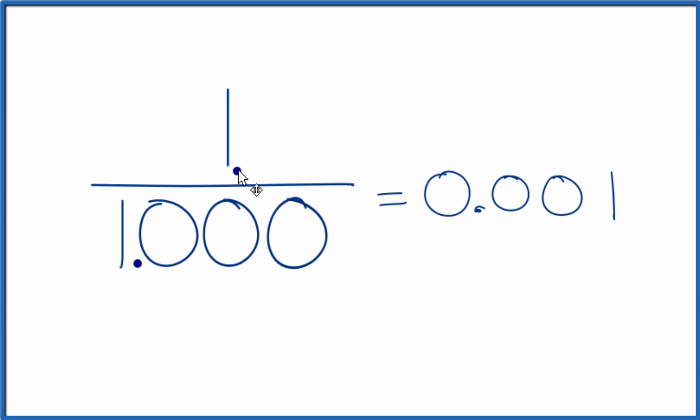Here, if we move it 3 places, 1, 2, 3, and we put 0s as placeholders. And you can see, we moved it 1, 2, 3.